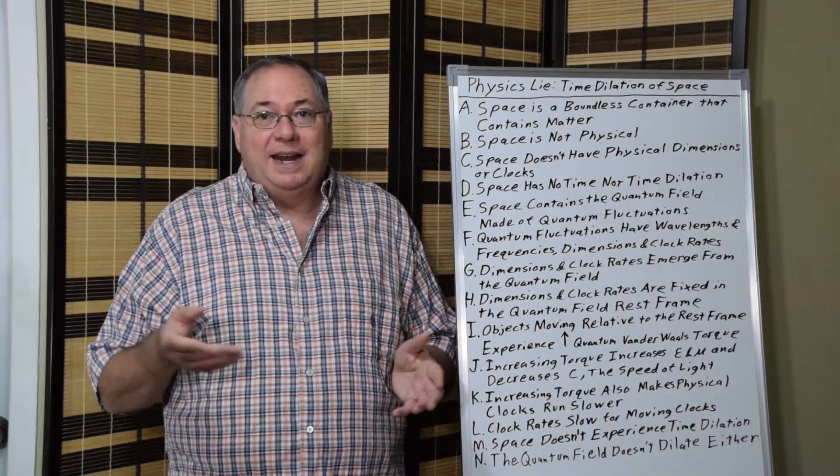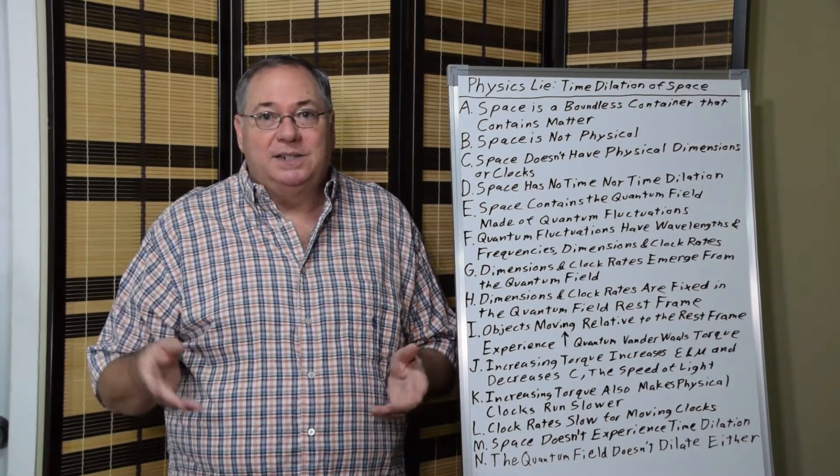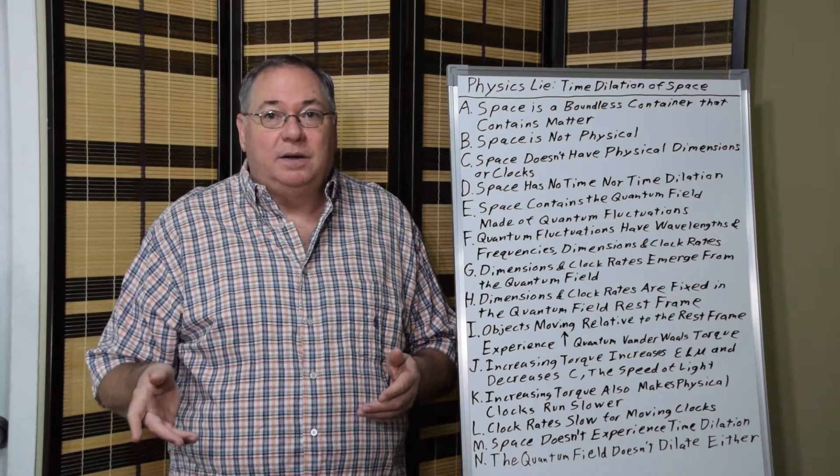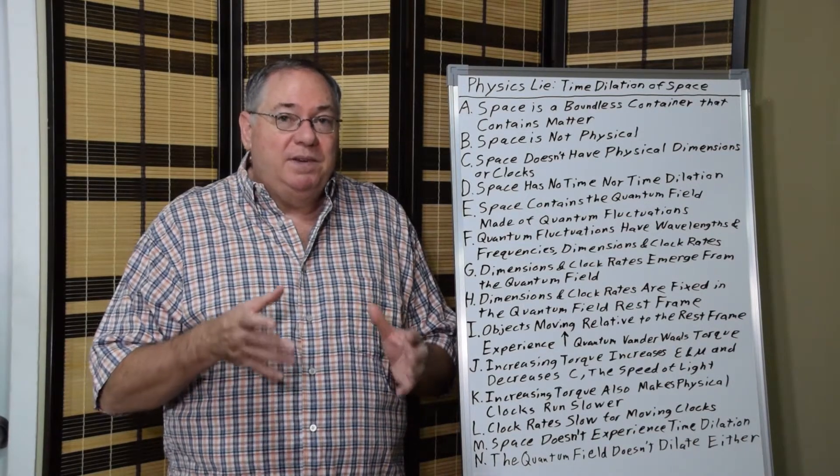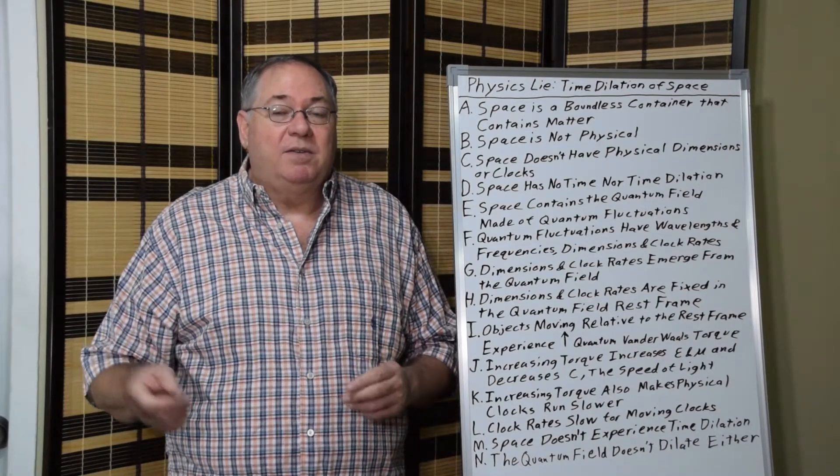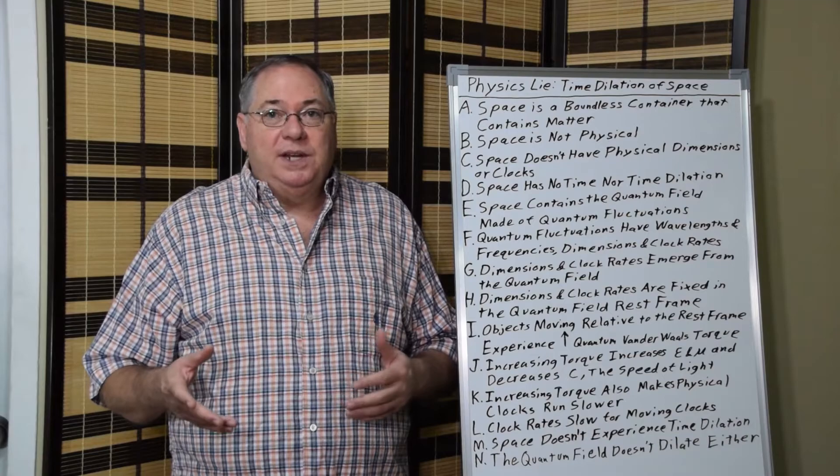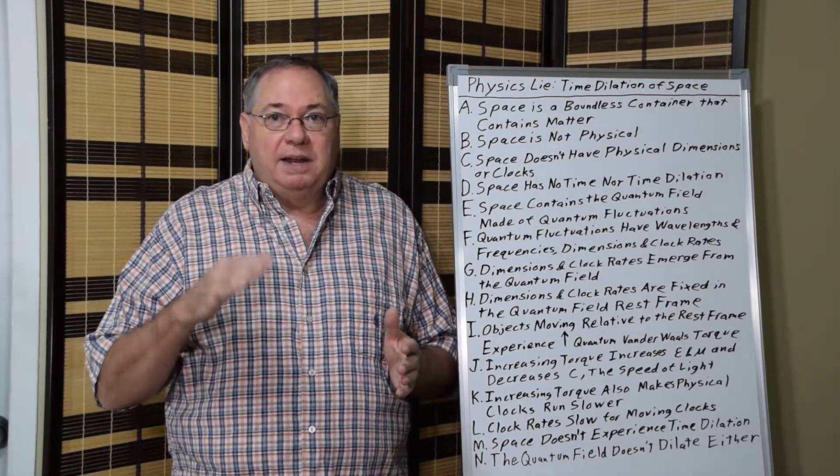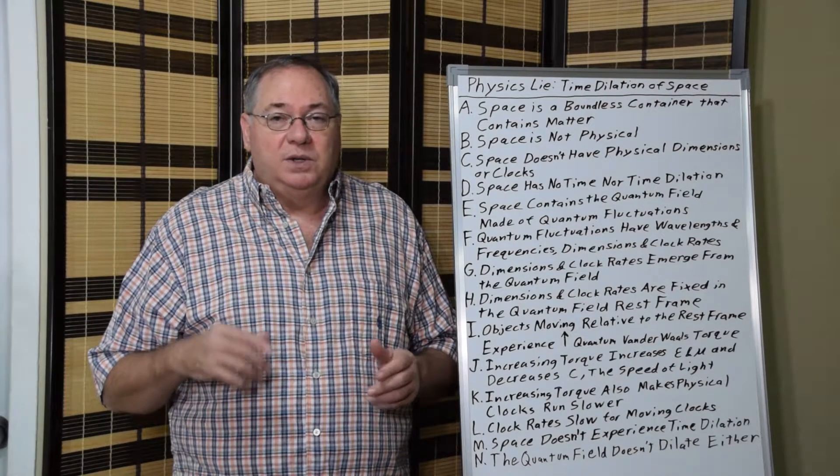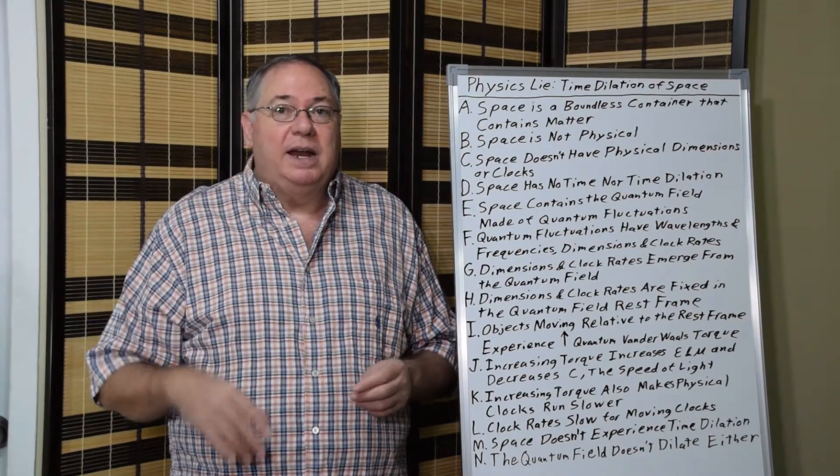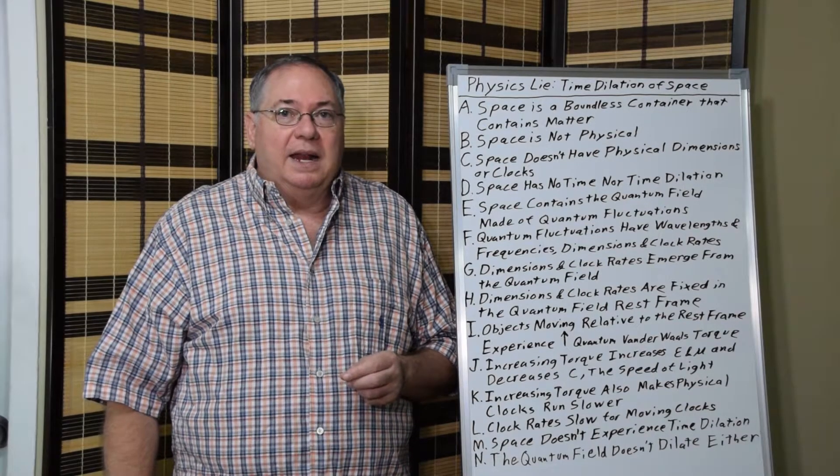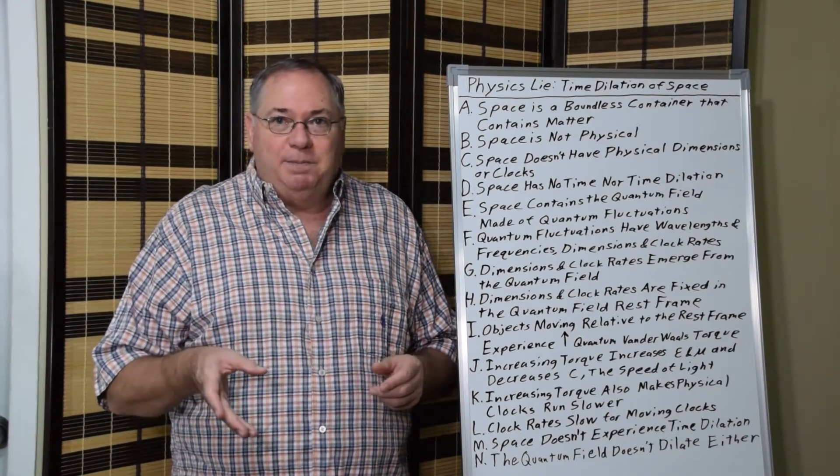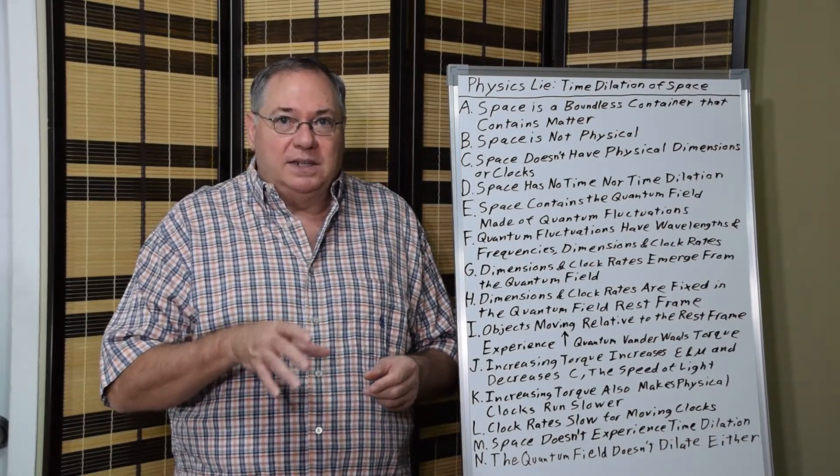It can't have time and it can't have time that dilates or changes. In the quantum field, time doesn't dilate either. What happens is moving physical clocks experience a change in clock rate. And that matches what we see with the GPS clocks or other clocks where we change the altitude and they operate at a different level, or change their velocity and they operate at a different rate. All we need is a velocity change and we get the relativistic effects. And it's not space dilating. It's just the physical clocks experiencing a different clock rate.